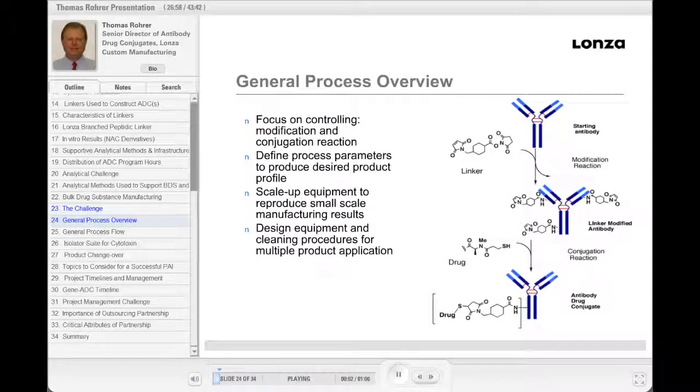This is a general process overview that exhibits the steps involved in ADC manufacturing. The most critical steps involve controlling the antibody modification and conjugation reaction to achieve the desired level of drug loading.